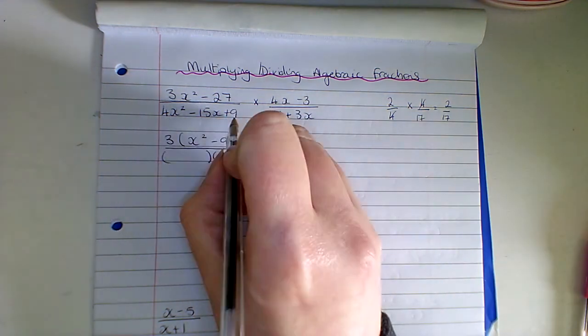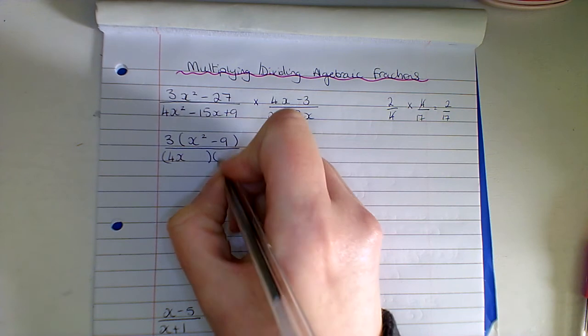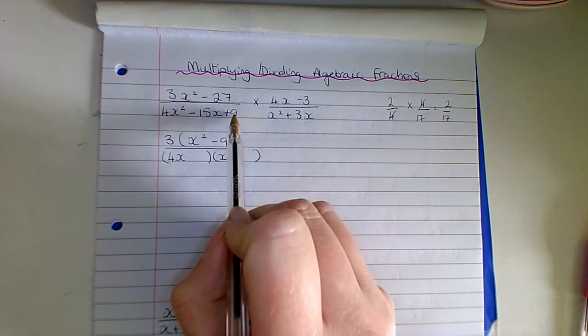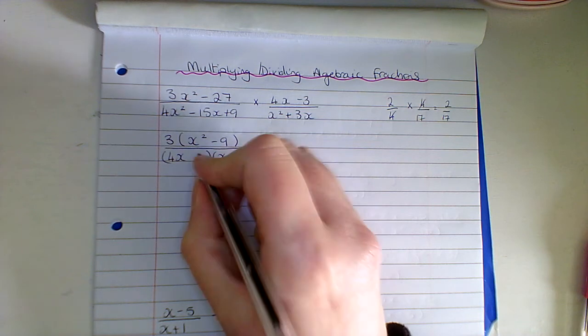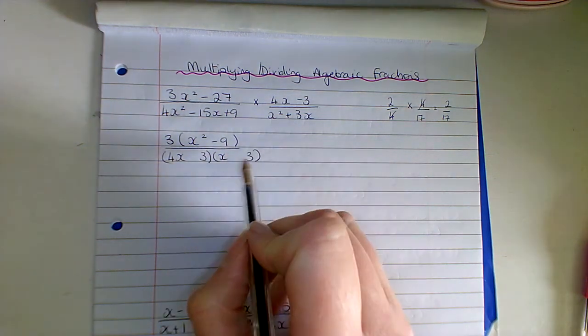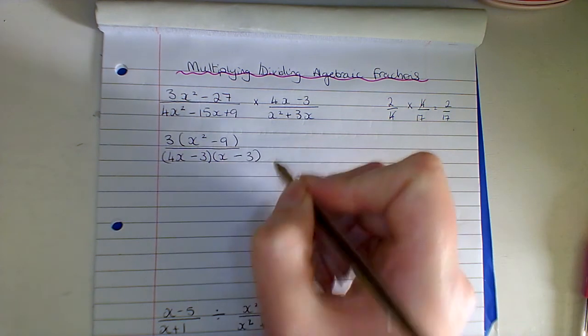And in here we're going to factorize this quadratic, so we have 4x and x, so there are my factors here, and then I'm going to look at the 9, so I'm going to have 3 by 3. 4 by 3 is 12 plus 3 is 15, and both of these are going to be negative.